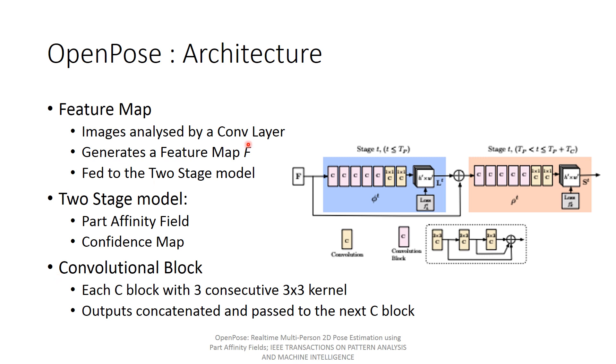This is the architecture of OpenPose. Instead of directly feeding the raw image file, a preprocessing stage is applied. In the preprocessing stage, the images are passed through a convolution layer which is similar to VGG19 and a feature map is obtained. This provides the structural information of individual frame and then it is fed to a two-stage model.